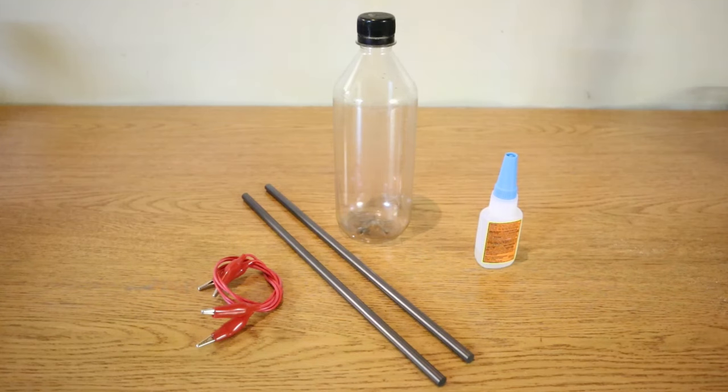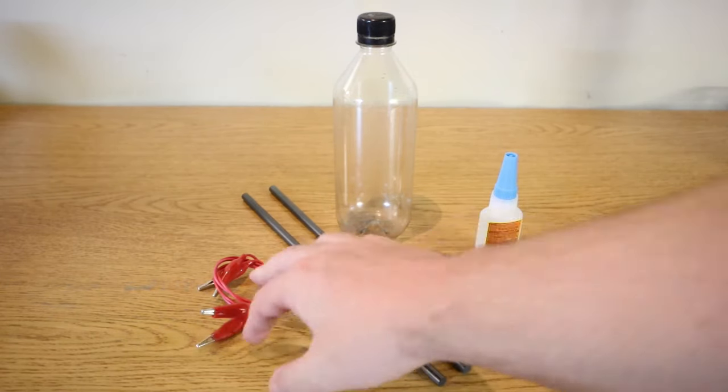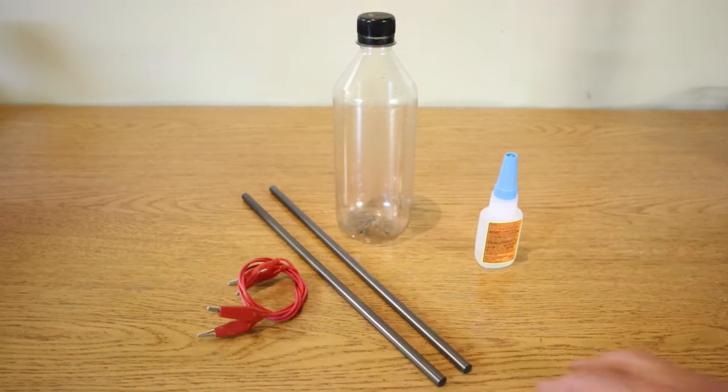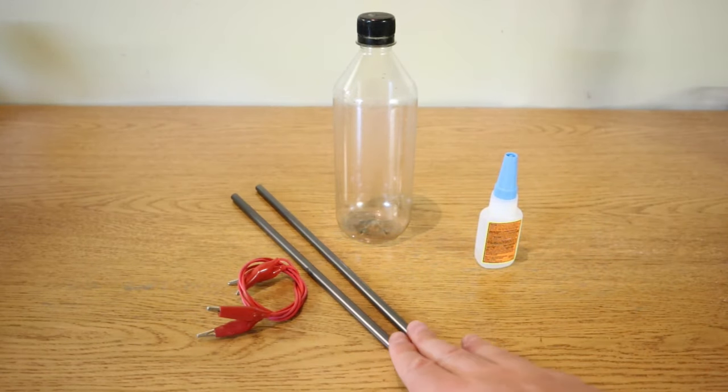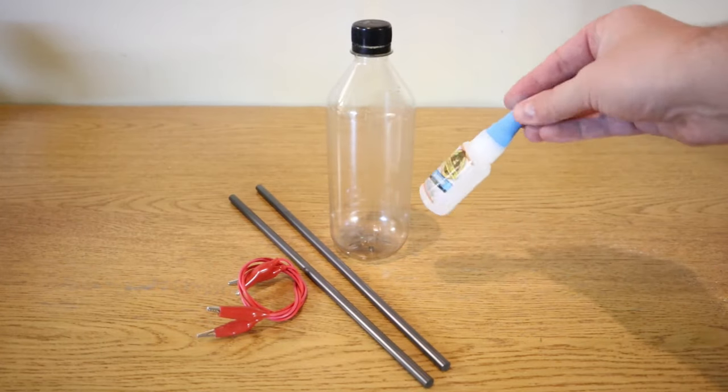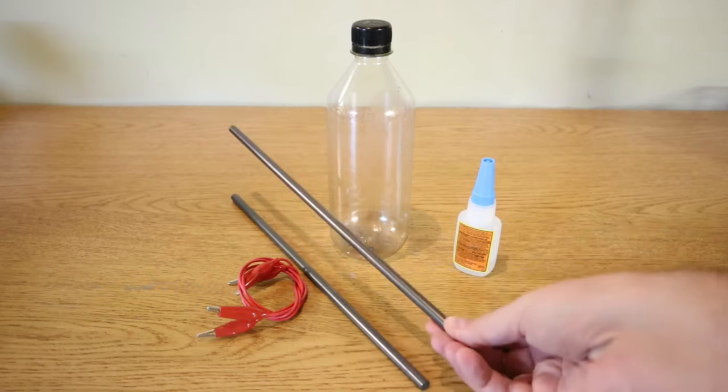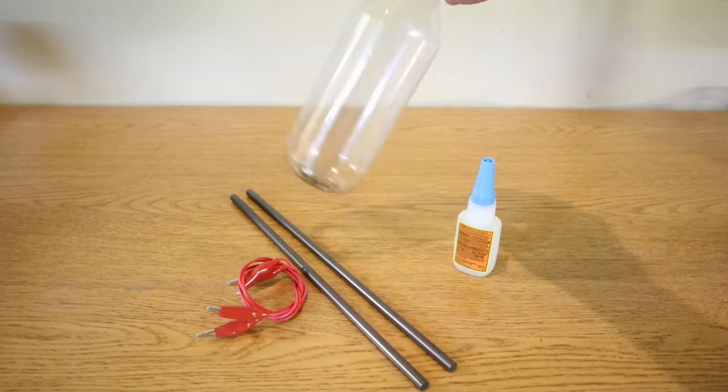Hello YouTubers, today I have decided to show you how to create hydrogen with simple tools like a graphite rod, some wires so we can pass electricity through the rods, a plastic bottle, and some glue which we can use to glue these rods inside the plastic bottle.